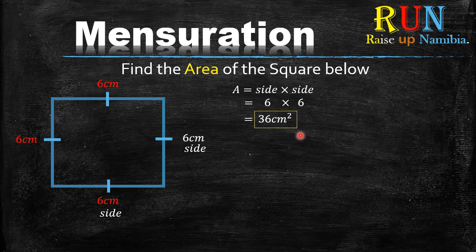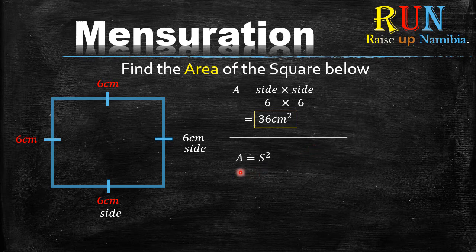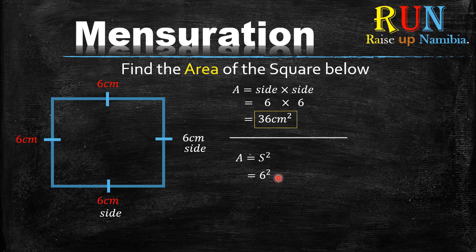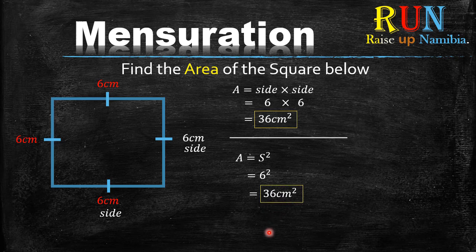Another way — which is essentially the same — is to use the formula: area equals side squared, or s squared. Since one side equals six, you square the six and get 36, which is your final answer. Both formulas give the same result, so you can choose either one.